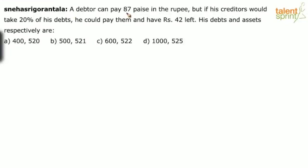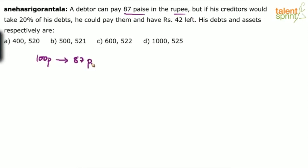A debtor can pay 87 paisa in the rupee. But if his creditors would take 20% of his debts, he could pay them and have rupees 42 left. This person is in a bad situation where he can only pay 87 paisa out of every rupee he has borrowed. That means if he has borrowed 100 paisa, he will be able to pay only 87 paisa out of it.